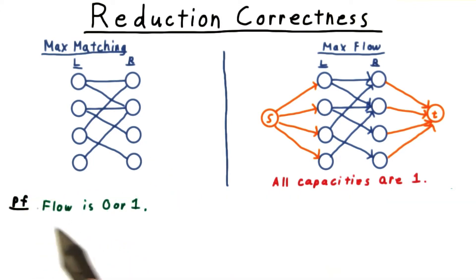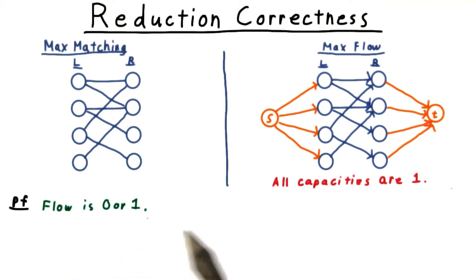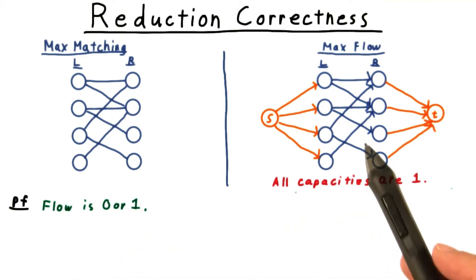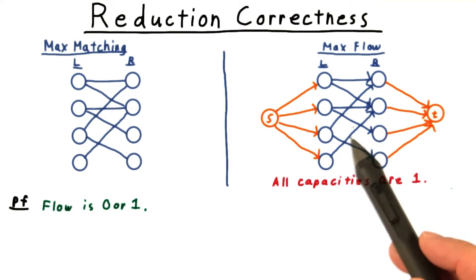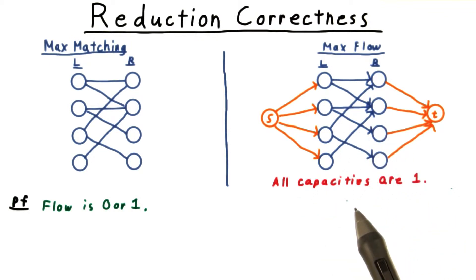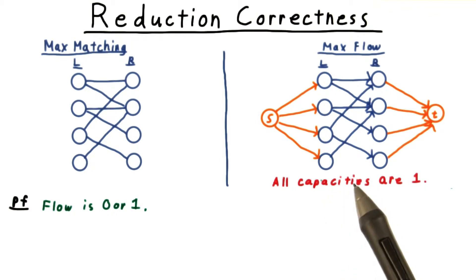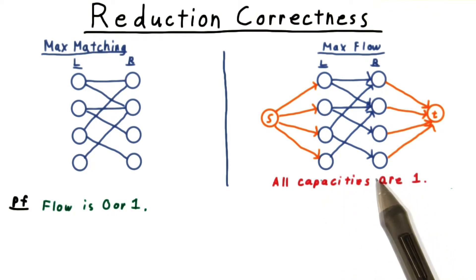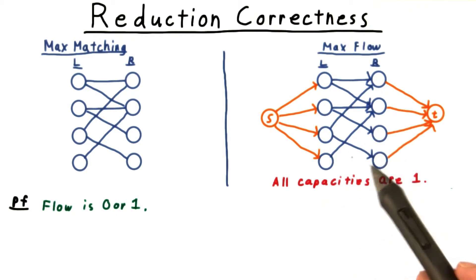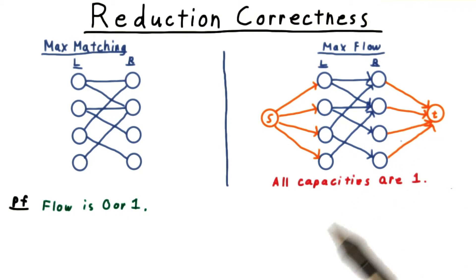To prove this theorem, we start by observing that the flow across any edge is either 0 or 1. Any augmenting path will have a bottleneck capacity of 1 — remember, all capacities are 1 — so we'll always augment flows by 1. But 1 is also the maximum flow that can go across any edge.